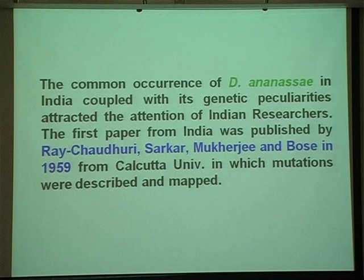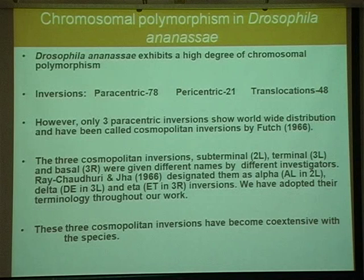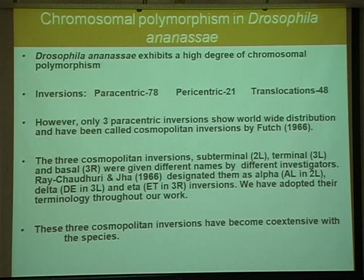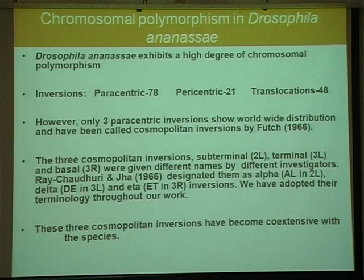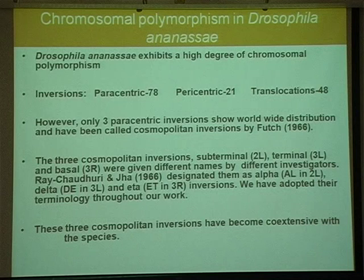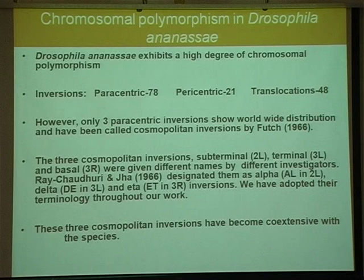I was mainly interested in chromosomal polymorphism. Drosophila is very unique in having chromosomal polymorphism, mainly because of paracentric inversions. Different species show different degrees of polymorphism — there is inter-specific and intra-specific variation, and different populations may show variation. In this species, the total paracentric inversions number 78, pericentric 21, and translocations 48. Out of these 78 paracentric inversions, three are very common, which have been called cosmopolitan inversions. Wherever you collect D. ananassae, you find these inversions.